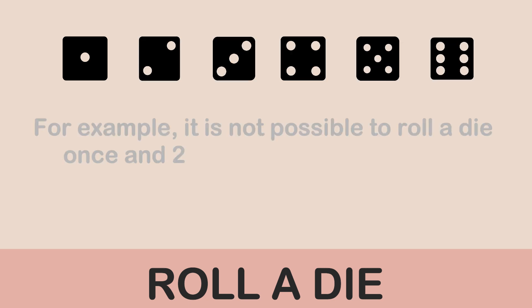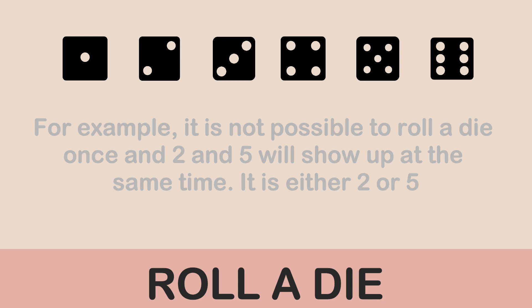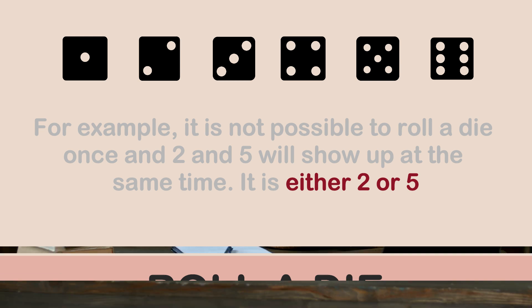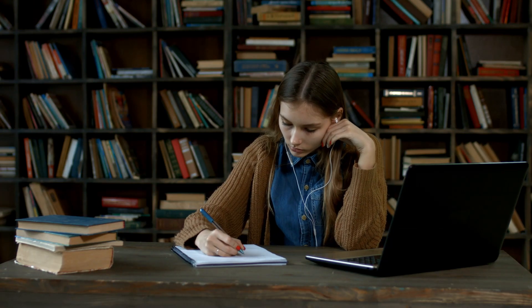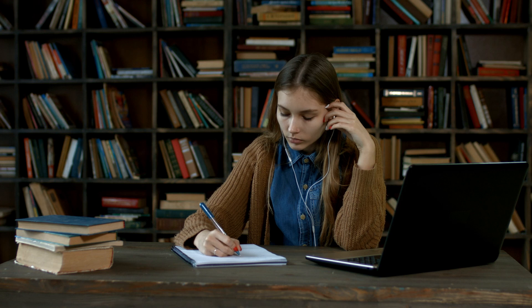Another example is rolling a fair die just once. You can have one, two, three, four, five, or six. You can't roll a die once and have two and five show up at the same time — that is never possible. So rolling a fair die just once is also a typical example of a mutually exclusive event.